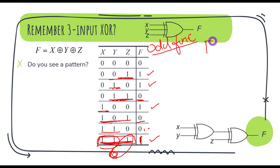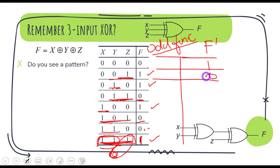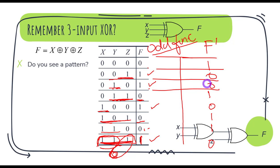Similarly, F-dash — the complement — will have everything inverted. F-dash will return one whenever the number of ones is even, and when the number of ones is odd it will be zero. It is the exact opposite of the XOR function. So F-dash, which is XNOR, is called an even function.